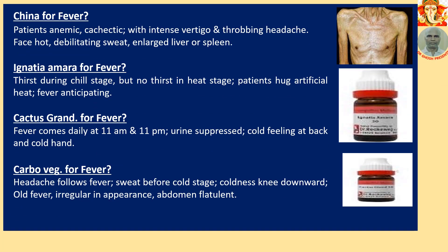China for Fever. Patient is anemic and cachectic — the figure is shown on the right hand side. There is intense vertigo and throbbing headache, hot face, debilitating sweat, and enlarged liver or spleen.